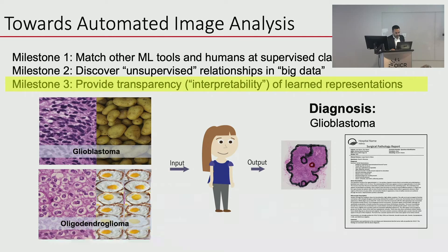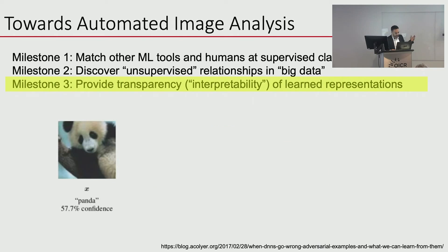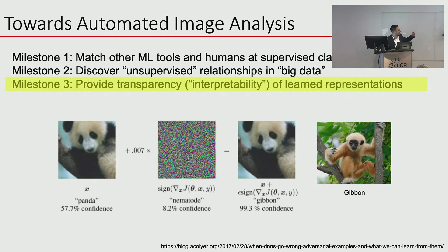That's where explainability and interoperability come in. A classic example: the Inception neural network correctly classified an image as a panda. Add just a little bit of noise — 1980s-style fuzz — and nothing really changes for the human, but the network went from a very confident correct prediction to a highly inaccurate diagnosis of a gibbon. Who knows why? Is it because the tree changed colors? Was the computer learning on the fuzz? That's what worries people.